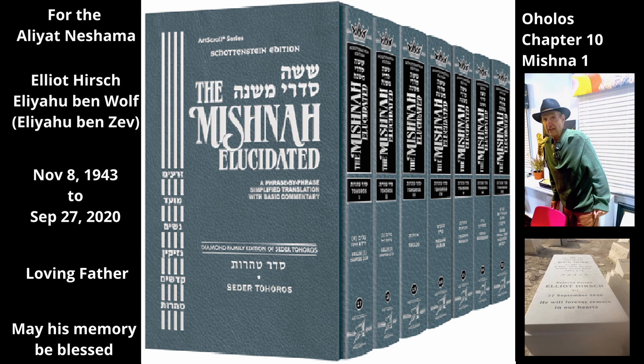If there is an opening in the roof of the house and it is at least a tefach square, the law says as follows. If there is tuma, such as a piece of corpse in the house, i.e. under the roof, utensils on the ground opposite, i.e. below the opening, remain tahor, because they are not in the ohel of the tuma.